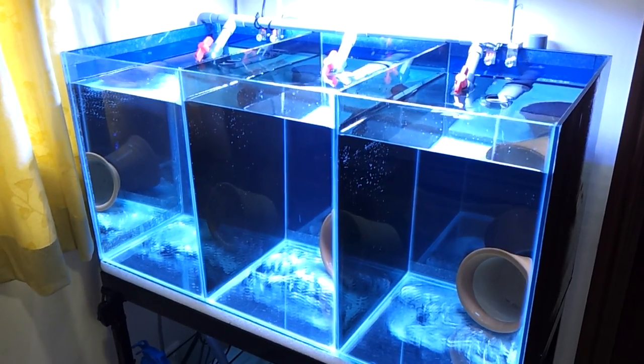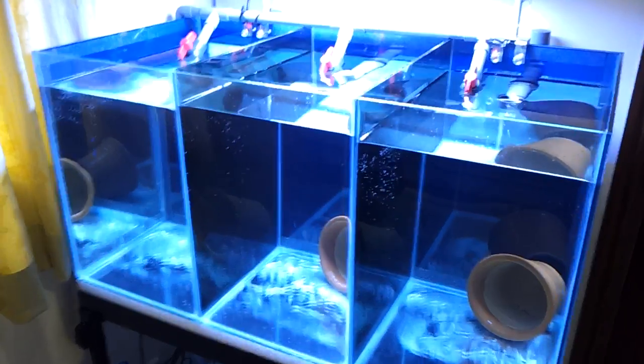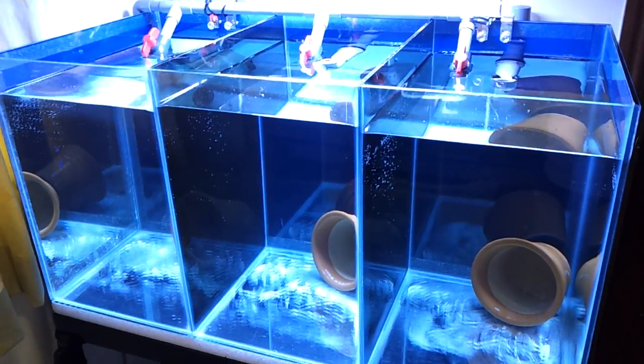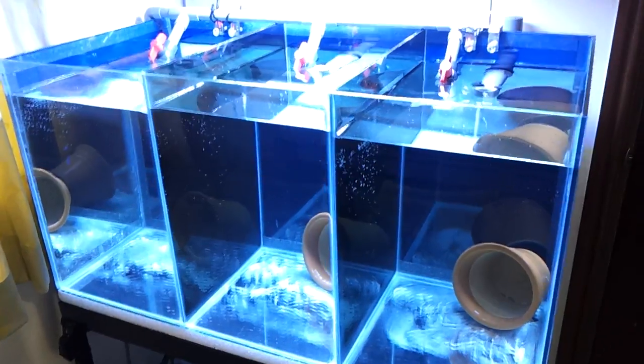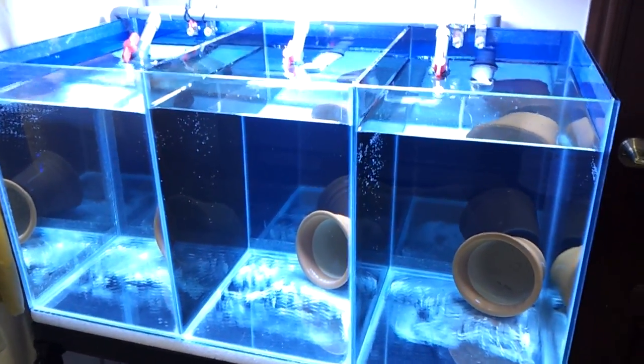Alright, here you have my clownfish breeding setup. The main tank is a 50-gallon three-feet tank, divided into three sections.